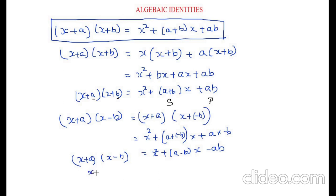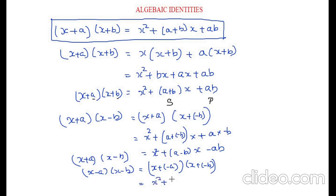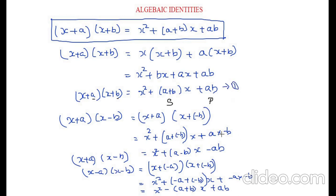Similarly, if you have (x − a)(x − b), you can write it as x + (−a) and x + (−b). Applying our original formula: x² + (−a + (−b))x + (−a)(−b). Taking the minus common gives x² − (a + b)x, and minus times minus becomes plus, so plus ab. So now we have the third formula derived. Instead of remembering three different formulas, it is better to remember just one formula, and from it you can derive all the others.